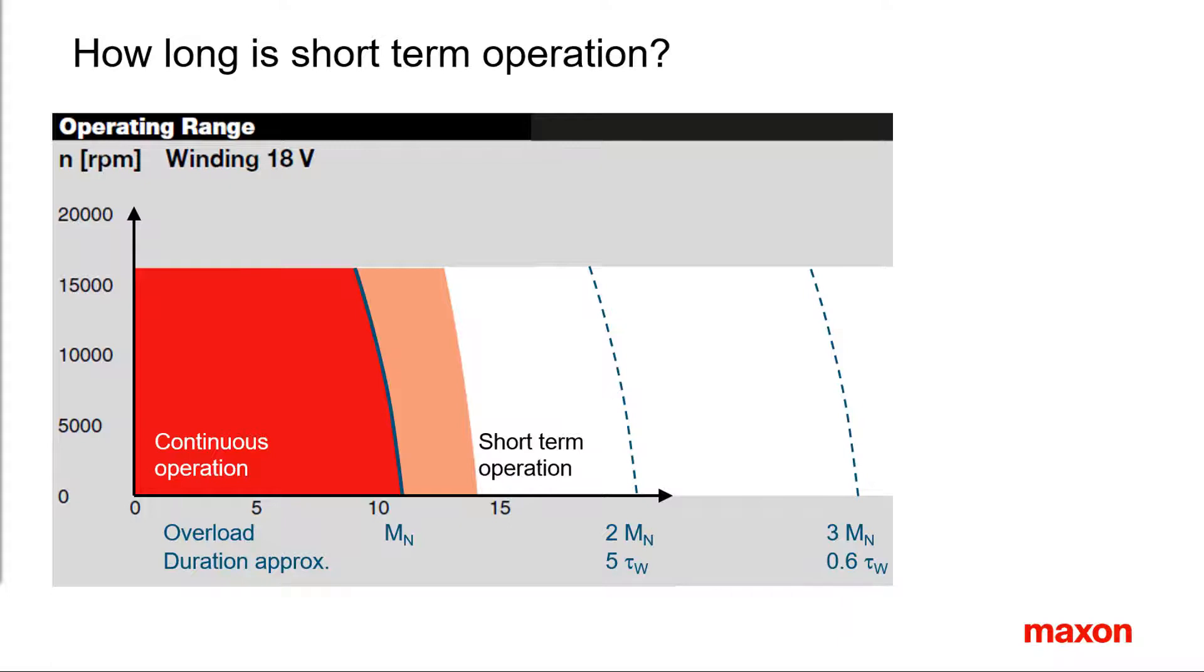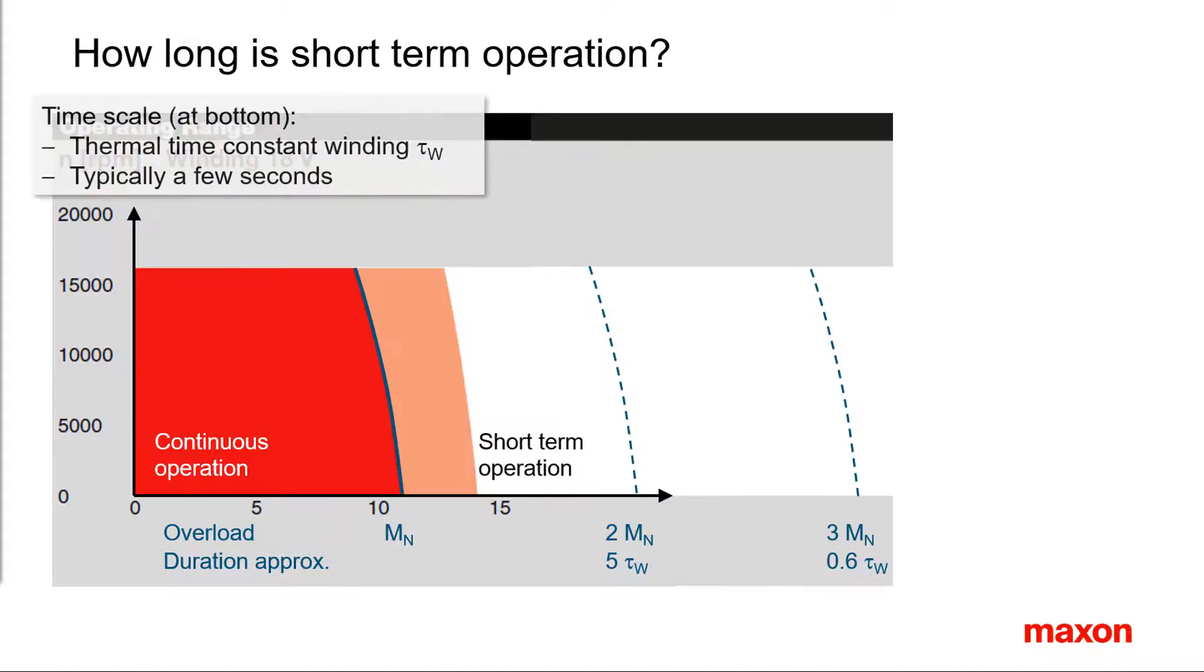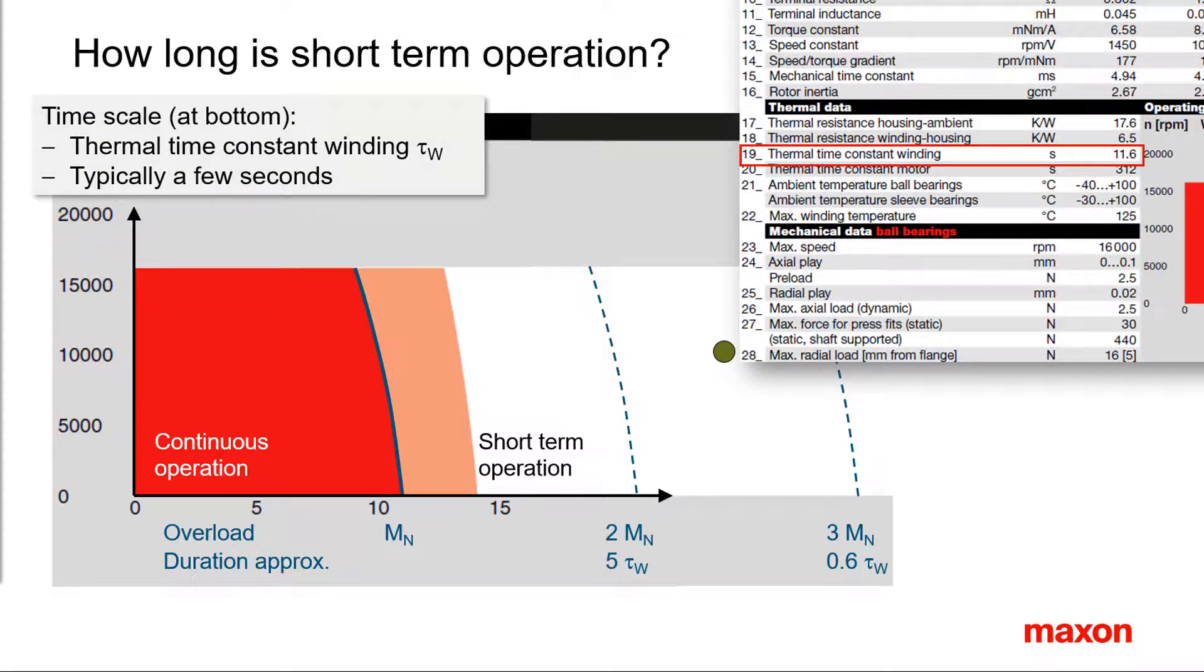Essentially, the limitation comes from the winding temperature. More precisely, how fast the winding heats up. The natural time scale is, therefore, the thermal time constant of the winding. It can be found in line 19 of the motor specification.